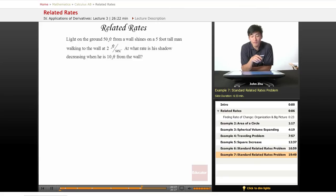Light on the ground, 50 feet from a wall, shines on a five foot tall man walking to the wall at two feet per second. At what rate is his shadow decreasing when he is 10 feet from the wall?